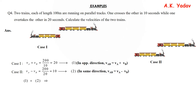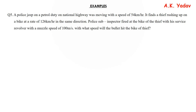Adding equation 1 and equation 2: 2VA = 30, so VA = 15 m/s. Substituting back into equation 1 gives VB = 5 m/s.